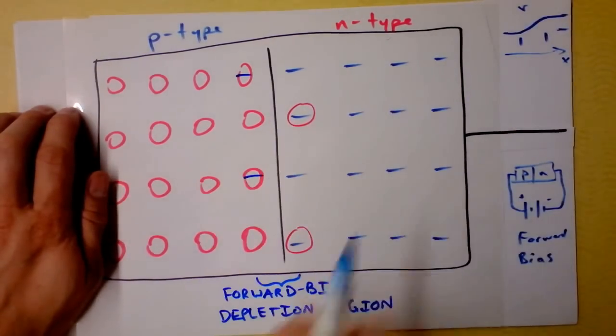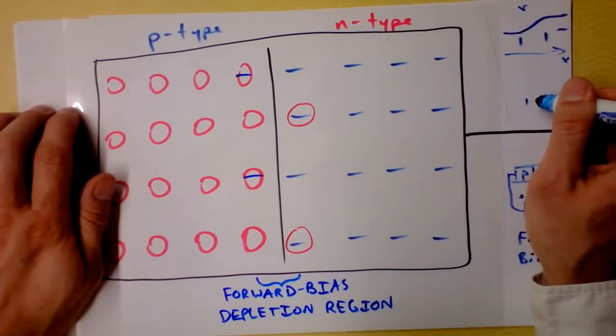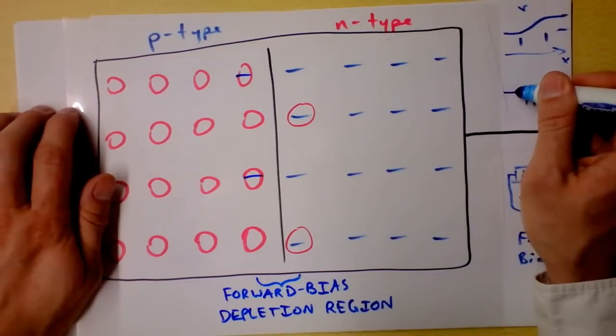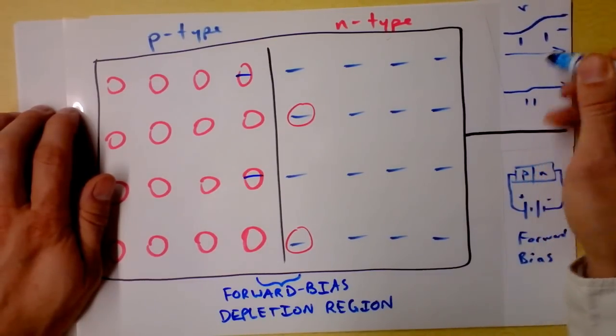What we'll see instead, if we have a forward bias, the depletion region is much narrower. Maybe it's from here to here, which means that the voltage change is very, very small as a function of position.